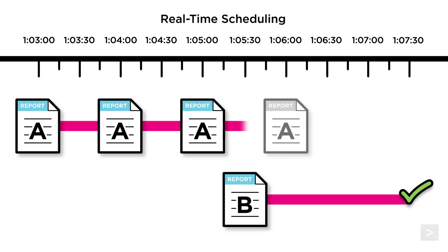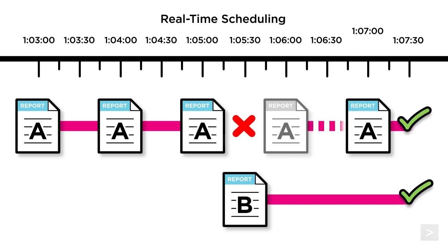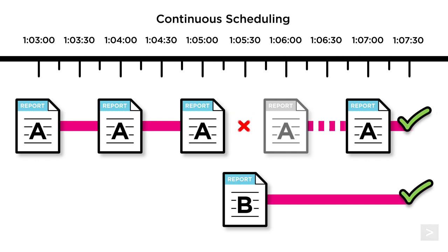For a report with real-time scheduling, which is the default option, the scheduler skips the 1:05 to 1:06 run of the report and schedules the next run of Report A at 1:07 for the 1:06 to 1:07 period. While we would have the most up-to-date information, we would have missed the data from the 1:05 to 1:06 period. As an alternative, there is continuous scheduling. The scheduler does not advance the schedule and attempts to run the report for the 1:05 to 1:06 minute period indefinitely.